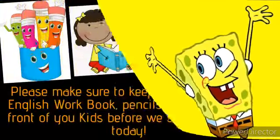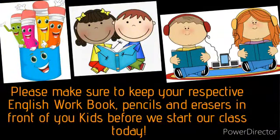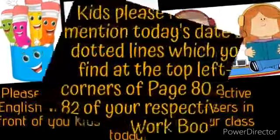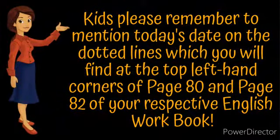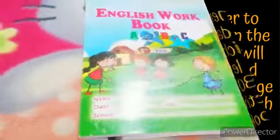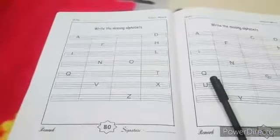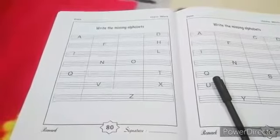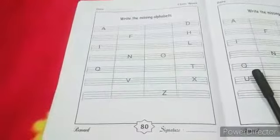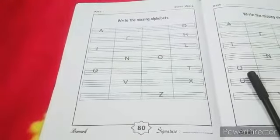I hope all of you have kept the English workbook, your pencils and erasers next to you before we start our class today. Please remember to write today's date on the dotted lines at the top left hand corner of page 80 and page 82 of your English workbook. I want all of you to open page 80 in your English workbook. I hope all of you have written today's date on the top left hand corner over here. Right kids? Great! So then let's start our class now.